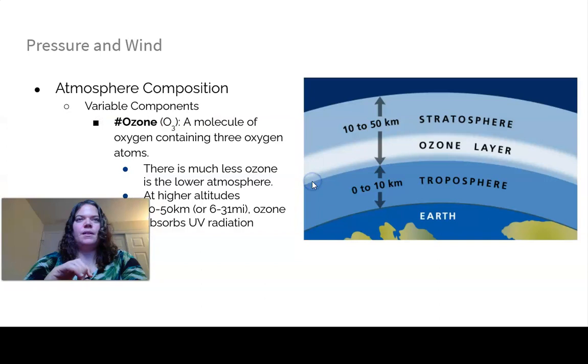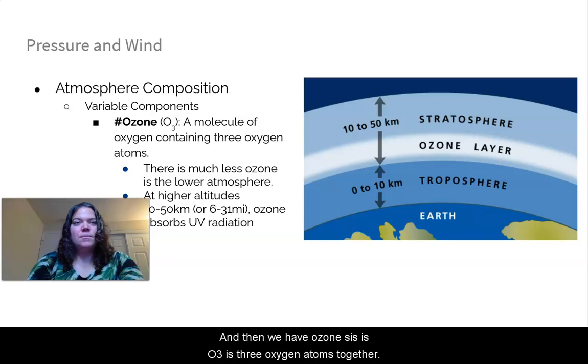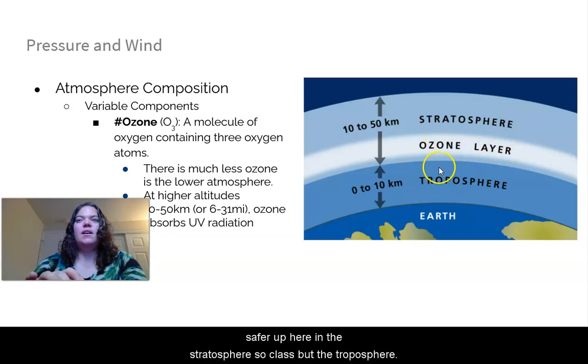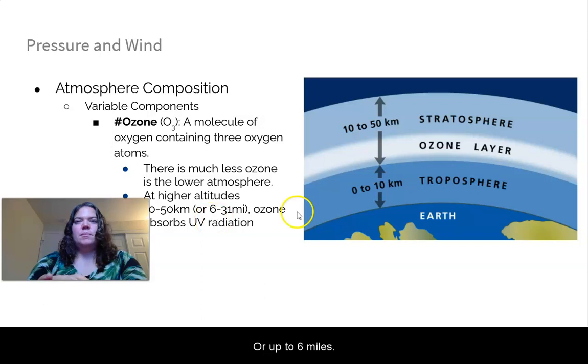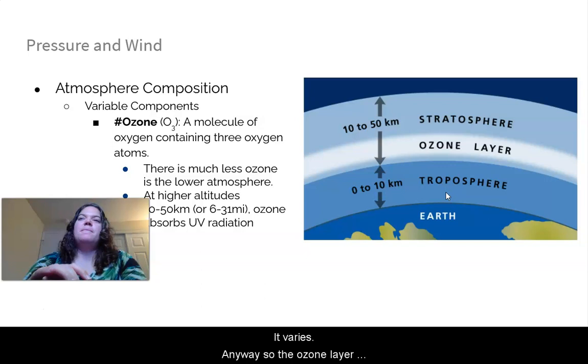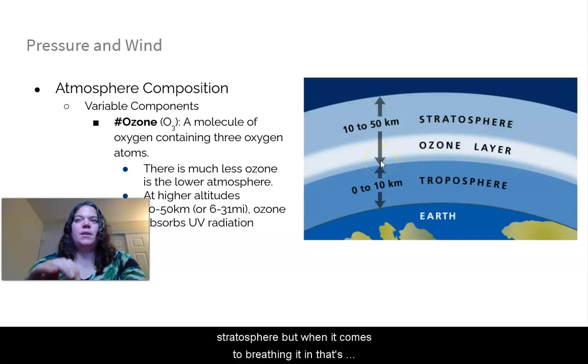And then we have ozone. So this is O3, three oxygen atoms together. And there's actually less ozone in the lower atmosphere. It is safer up here in the stratosphere. The troposphere is the bottom layer of the atmosphere, that's where we live. It's about zero to 10 kilometers or up to six miles. So the ozone layer protects us from UV radiation up in the stratosphere. But when it comes to breathing it in, that's dangerous, and we'll cover that in the air pollution chapter.